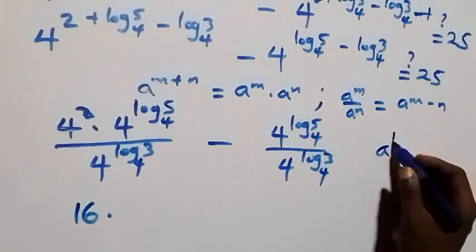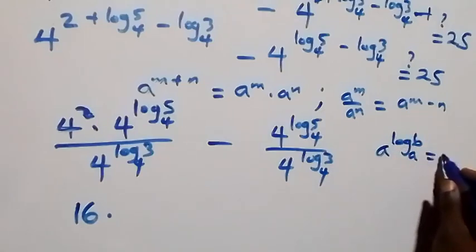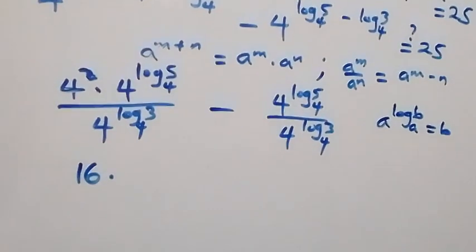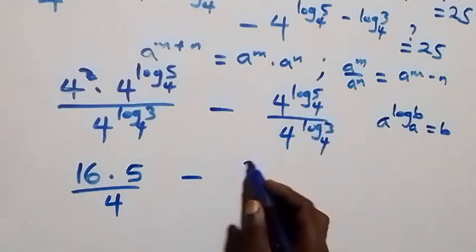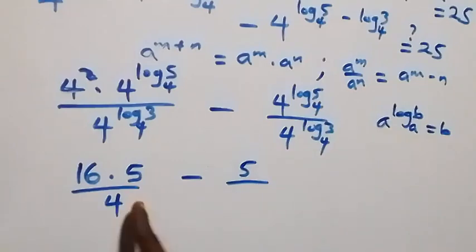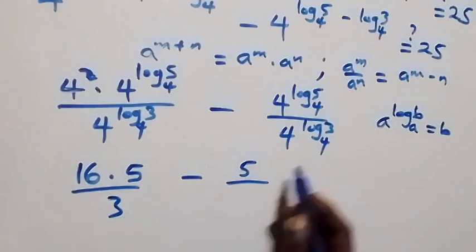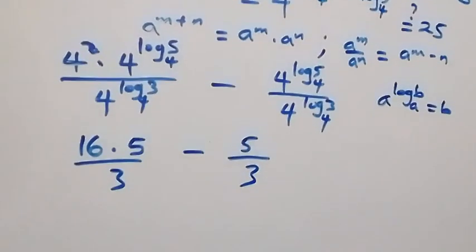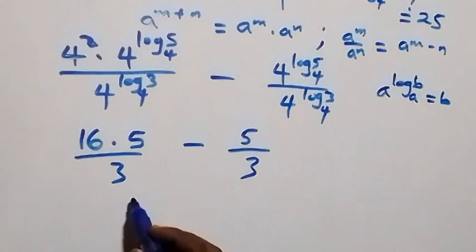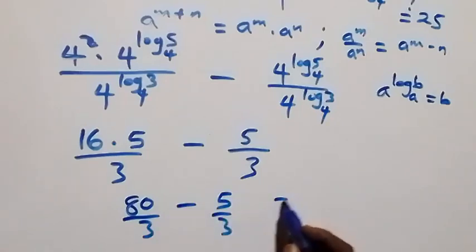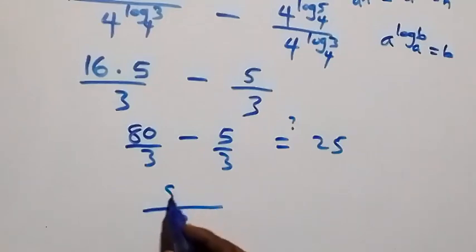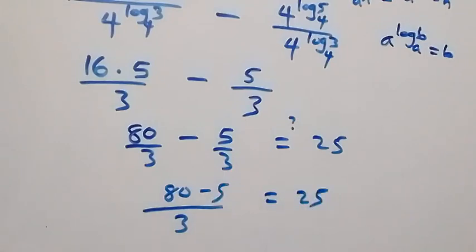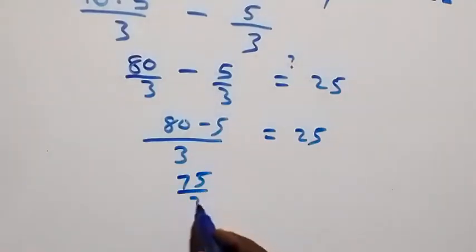Four squared is 4 times 4, which is 16. From the logarithm law, a raised to power log b to base a equals b. So four raised to power log 5 base 4 is 5, and four raised to power log 3 base 4 is 3. This gives us 16 times 5 over 3, minus 5 over 3, which equals 80 over 3 minus 5 over 3. The LCM is 3, so we get 80 minus 5 over 3, which is 75 over 3, equaling 25.